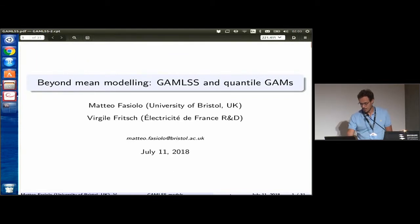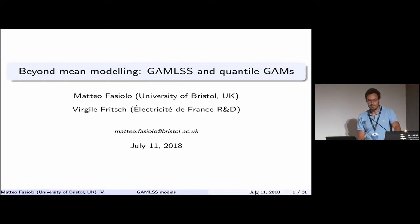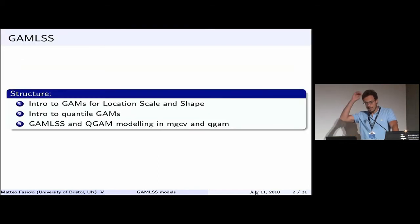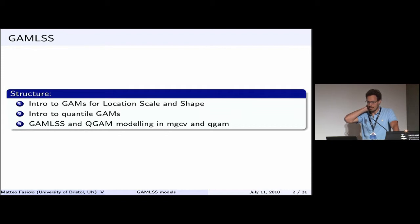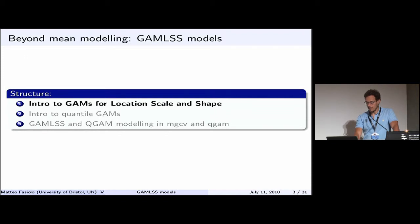Now moving to the second session, we go beyond mean modeling. We are going to look at GAMLSS models and quantile GAMs. I'll start by describing the GAM model for location, scale, and shape — also called GAMLSS — then introduce quantile GAMs, and show how to use these models using MGCV, QGAM, and the QGAM R package.